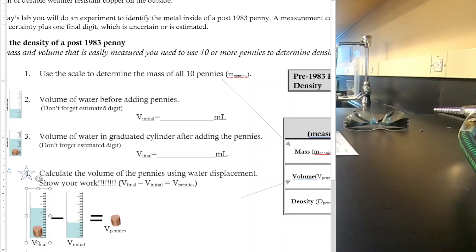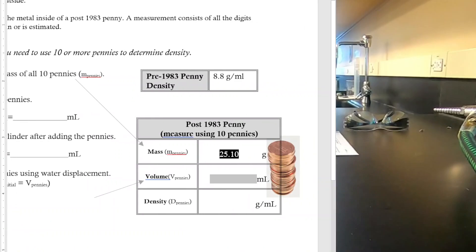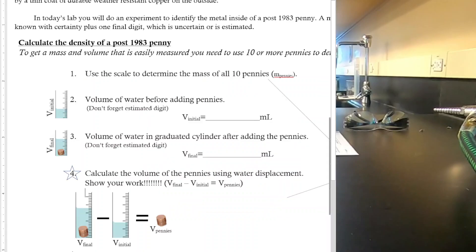You take your final volume—whichever one is higher, the one that has the pennies and the water in it—and subtract your initial volume. That gives you the volume of just the pennies on their own. That is the volume you're going to transfer into the box. I'll let you do the calculating with those two numbers.